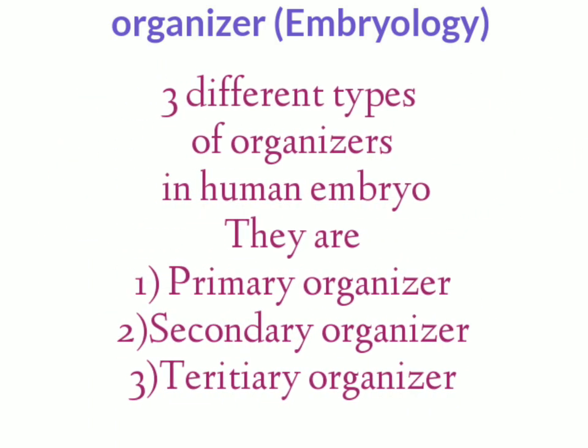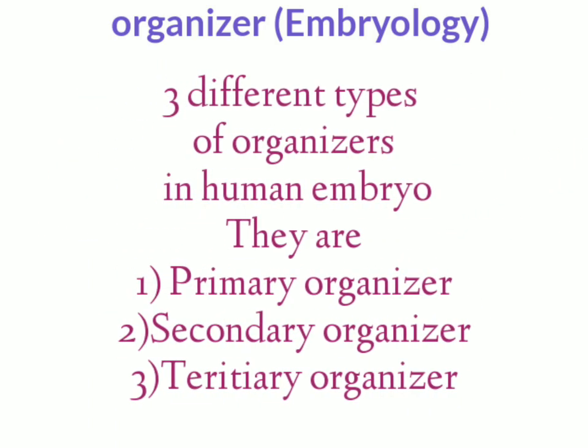There are totally three different types of organizers in the human embryo. They are the primary, secondary, and tertiary organizers.